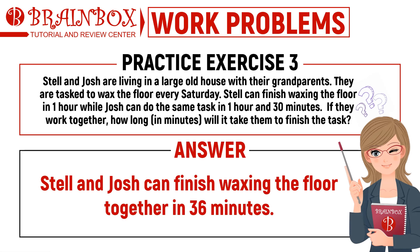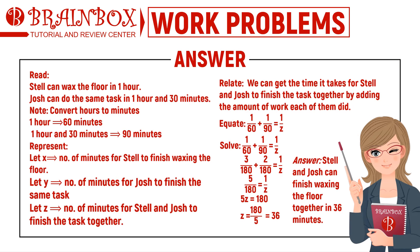Time is up. Stelle and Josh can finish waxing the floor together in 36 minutes. Following the same process, we first convert the given hours to minutes: Stelle can do the task in 60 minutes while Josh can do it in 90 minutes. We are solving for z, the time it takes for both to finish together. Using the general formula: 1 over 60 plus 1 over 90 equals 1 over z. Solving for z, we get z equals 180 over 5, or 36. Therefore, Stelle and Josh can finish waxing the floor together in 36 minutes.